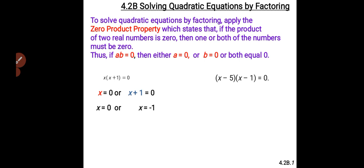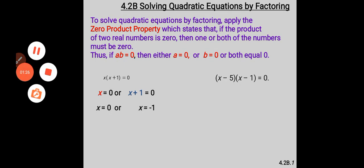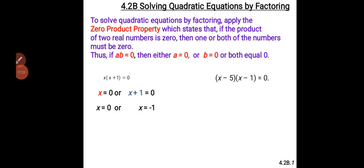This is what we call the zero product property. Another example: if we have X minus five in brackets times X minus one in brackets equals zero, then it means X minus five equals zero or X minus three equals zero. Taking the constants to the other side, we have X is equal to five and X is equal to one.